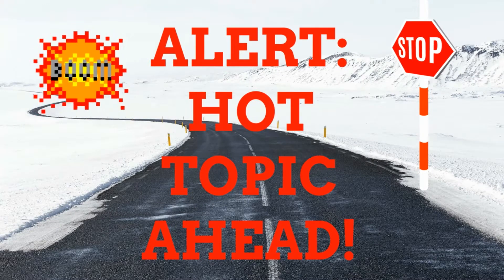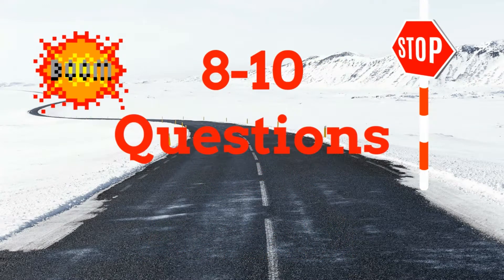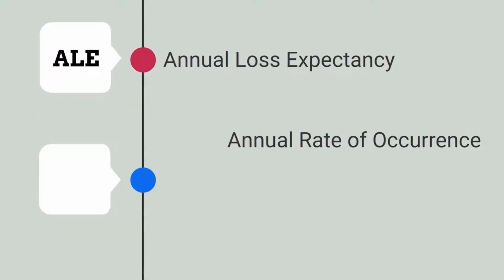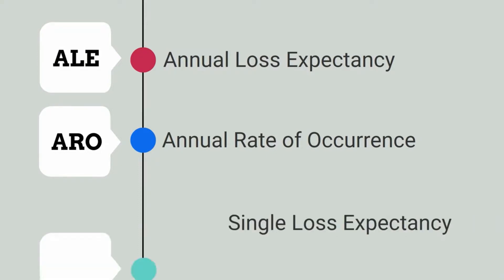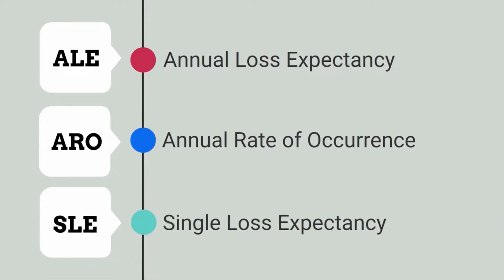You'll probably have eight to ten questions on this topic, so pay attention here. Specifically, ALE, ARO, and SLE are things that you will frequently see whenever we start to talk about this a little bit more specifically.